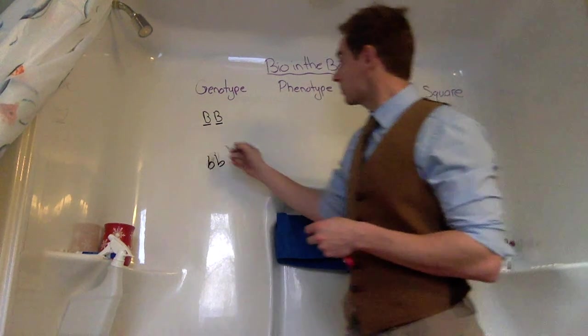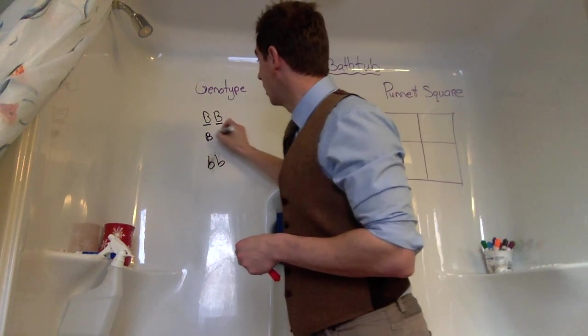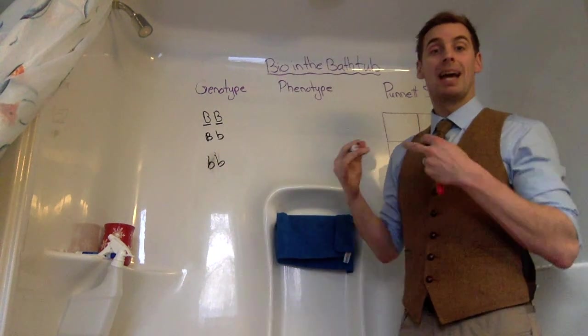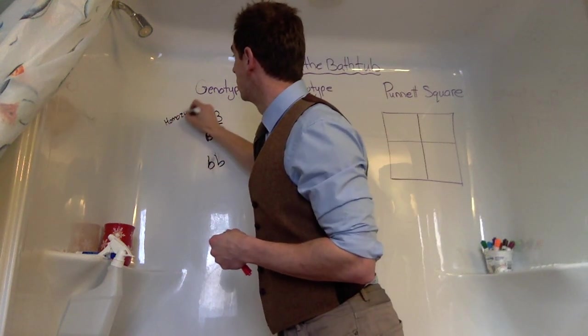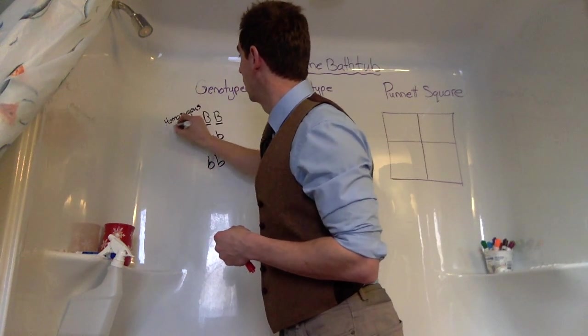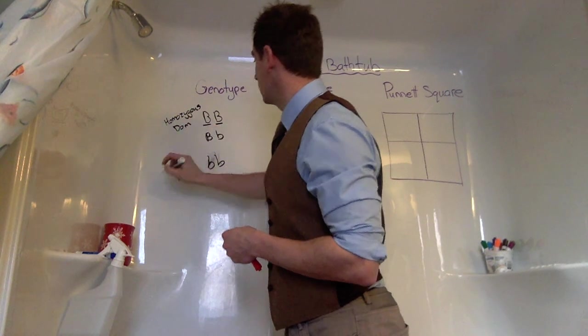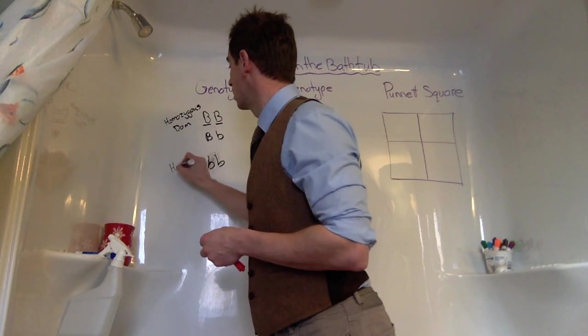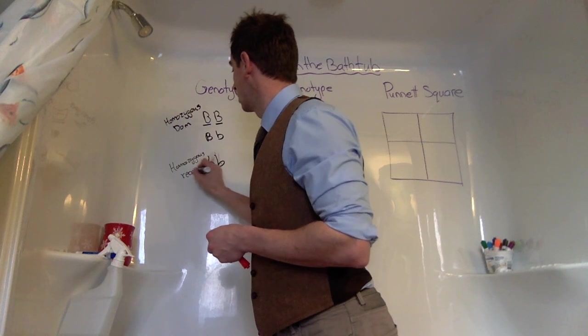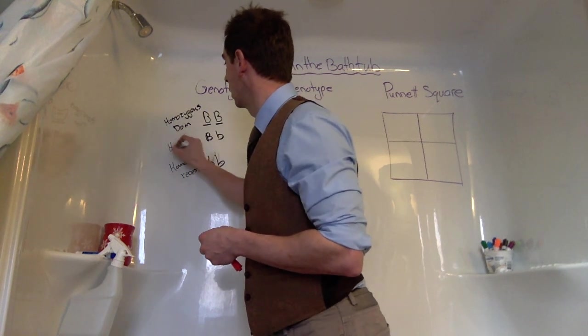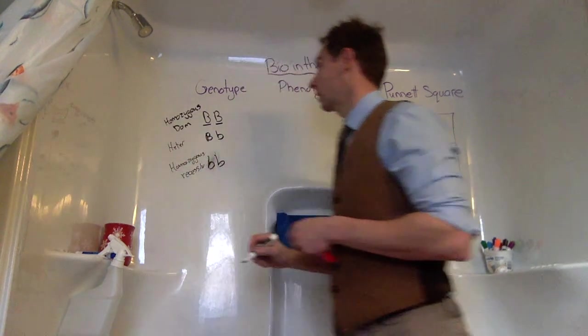In the middle, where we have one dominant trait and one recessive, we have something called heterozygous. So we have homozygous dominant, homozygous recessive, and heterozygous.